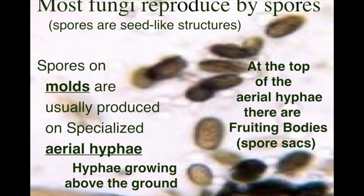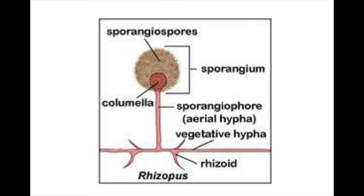When mold grows — especially black bread mold — if it grows up and out of the bread, the individual strand is called an aerial hypha because it's growing up in the air. On the top of aerial hypha you usually have a spore sac called a fruiting body or sporangium. The sporangium contains all the spores, and remember, fungi do not have seeds — they have spores.